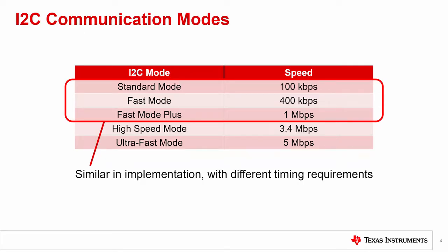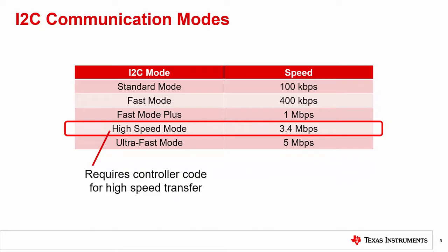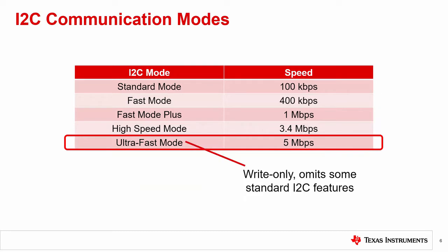However, they all have different timing specifications for each of the modes, and hardware implementation of the I2C in the devices are different to accommodate the different speeds. I2C also has two other modes for higher data rates. High speed mode has a data rate up to 3.4 megabits per second. In this mode, the controller device must first use a controller code to allow for high speed data transfer. This enables high speed mode in the target device, and this mode may also require an active pull-up to drive the communication lines at a higher data rate. Ultra fast is the fastest mode of operation and transfers data up to 5 megabits per second.